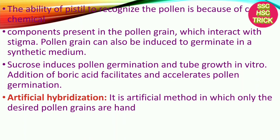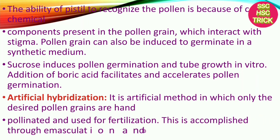Boric acid also plays an important role in sexual reproduction and seed formation. Artificial hybridization is an artificial method in which only the desired pollen grains are used for fertilization. This is accomplished through emasculation and bagging procedure.